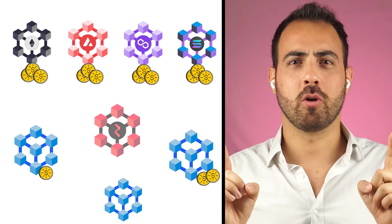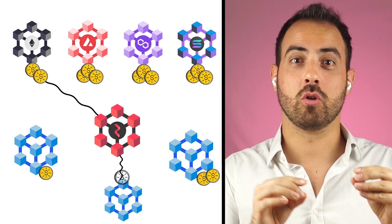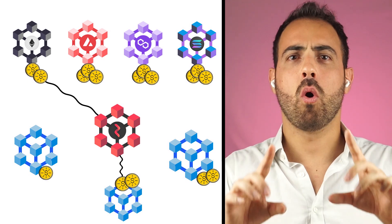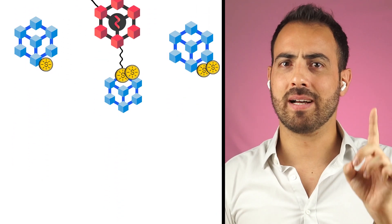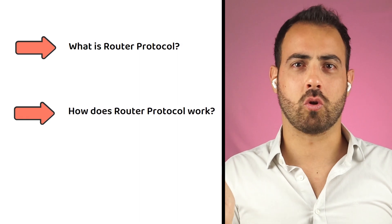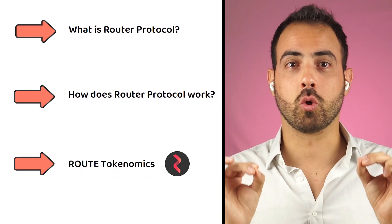And that is where Router Protocol comes in by providing a service that will allow you to swap assets across multiple blockchains. I know all these sound complicated, but don't worry, as in this video, I am going to explain what Router Protocol is, how Router Protocol works, and what the tokenomics of the Rout token are.